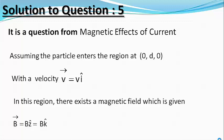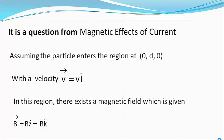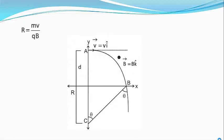And hence, the particle will move in a circular path whose radius is given to be capital R equals mv divided by qb with center at point C as shown in the figure.